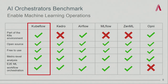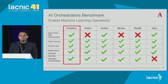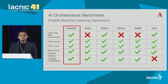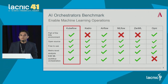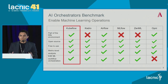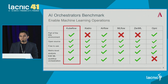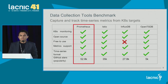The criteria were: whether the orchestrator deploys its infrastructure using Kubernetes, whether it's open source and free, whether it permits metric-level analysis as opposed to logging, and whether there is end-to-end workflow orchestration. Based on the analysis, Kubeflow and Kedro meet these specifications, but Airflow is very general. Since Kubeflow is specifically for machine learning, we decided to implement Kubeflow for the AI pipelines at Aligo.